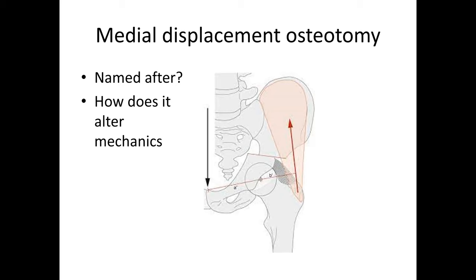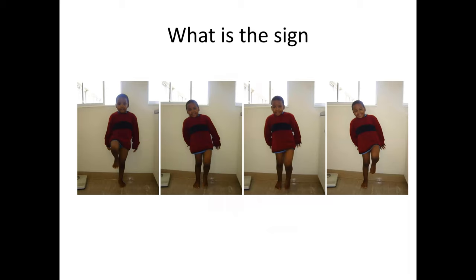Now revisiting the far right-hand picture: were this child throwing his entire weight over the head of the femur, what's the resultant force in that hip going to be? He's done what the osteotomy has done — he's moved the center of his body weight over the center of his hip joint, and has basically eliminated his abductor lever arm. Correct.